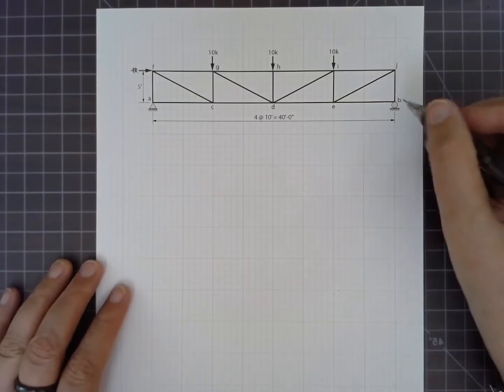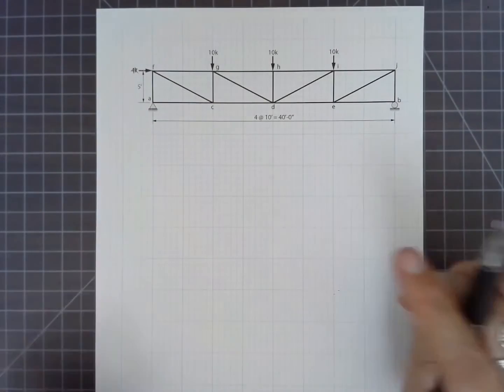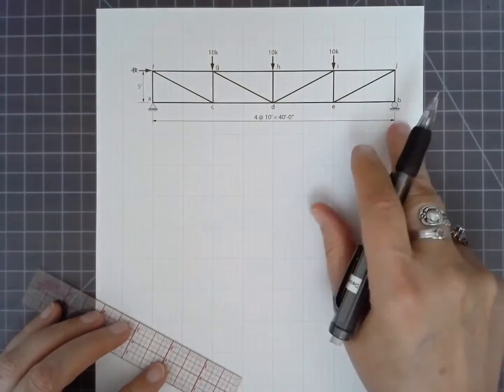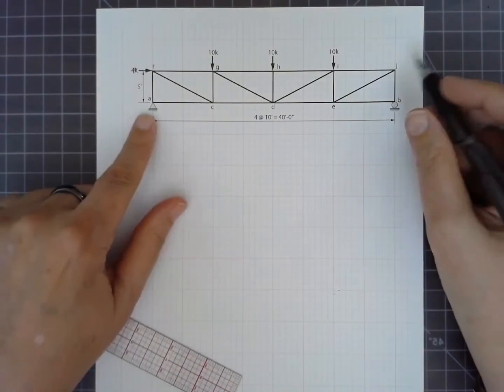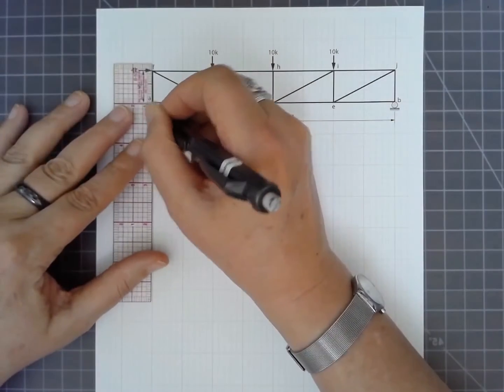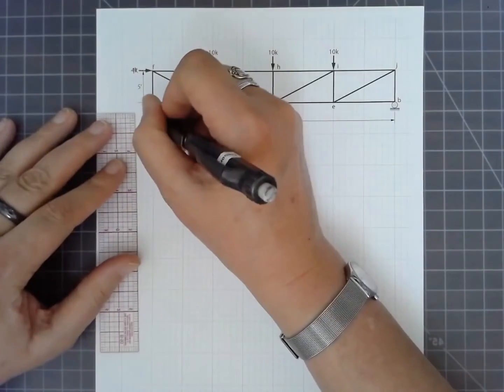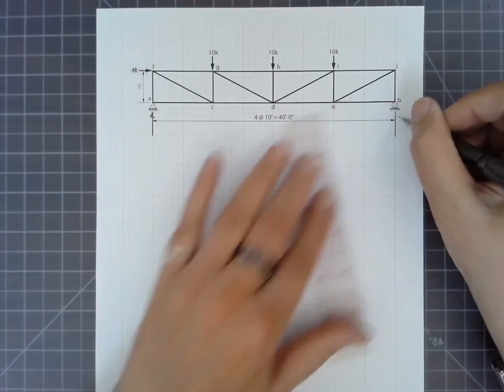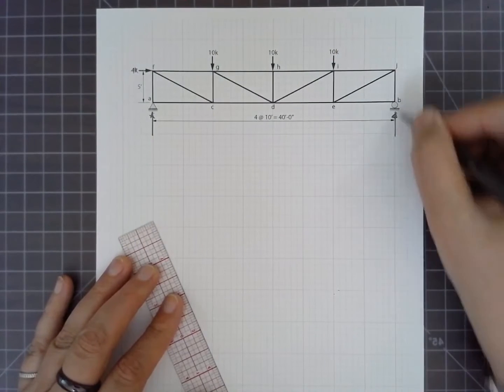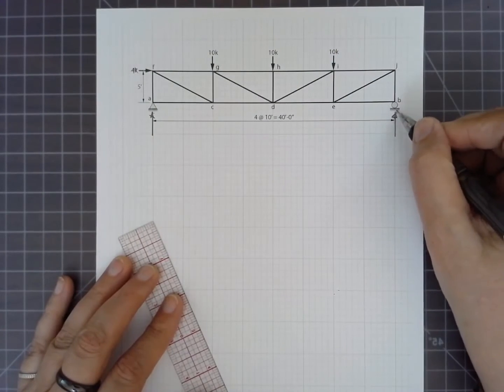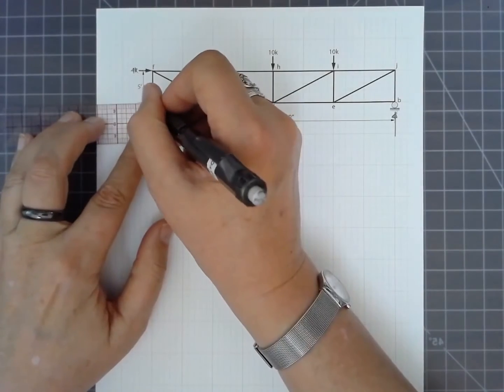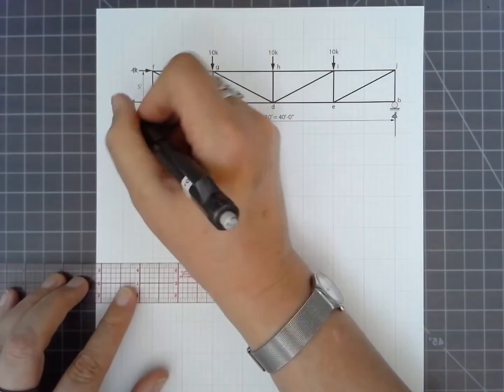First thing we want to do here is find the reactions. I'm going to do this two ways. One is of course with summing moments because we have our situation here. We have a pin support here and a roller support over here. The roller support can only hold forces perpendicular to its surface. The pin support therefore has to carry this four kip horizontal force.